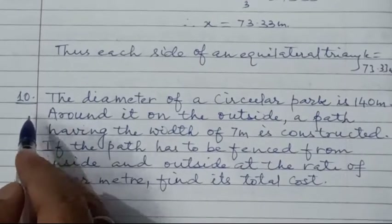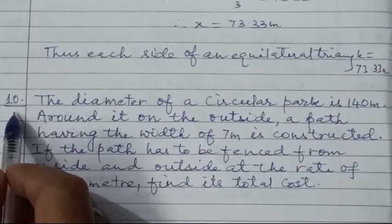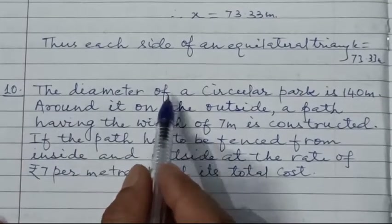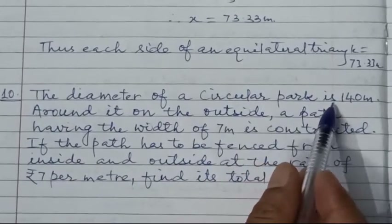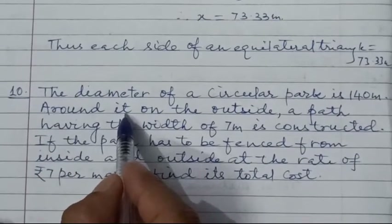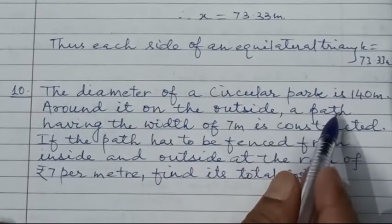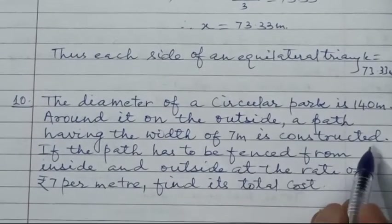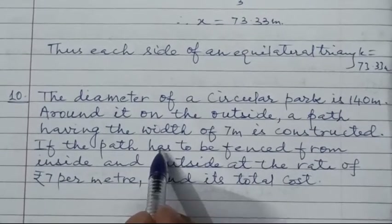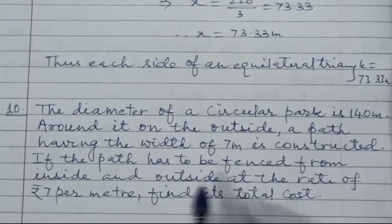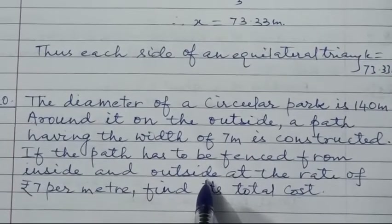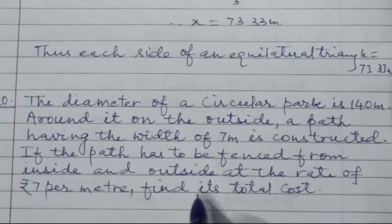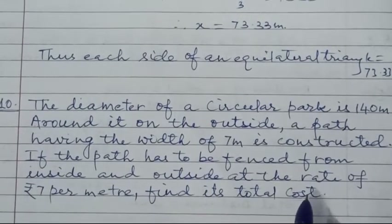Question number 10, taken from worksheet 5. The diameter of a circular park is 140 meters. Around it, on the outside, a path having the width of 7 meters is constructed. If the path has to be fenced from inside and outside at the rate of Rs. 7 per meter, find its total cost.